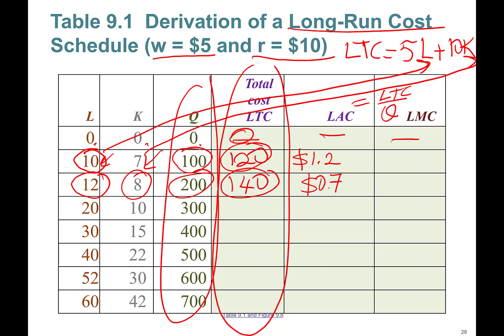Next, long-run marginal cost. We can calculate the change in total cost—zero to 120—so 120 minus zero dollars divided by the change in quantity, 100 minus zero. This is going to be 1.2. Let's find the long-run marginal cost here. Total long-run cost changes from 120 to 140, that's a $20 increase, divided by 200 minus 100, which is 100. So 20 divided by 100 is going to be 0.2 marginal cost.